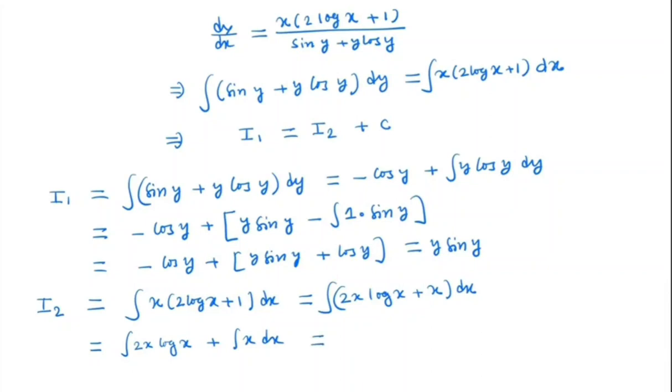So we solve the first term integral 2 x log x by integration by parts. So we have integration of 2 x which is x squared log x minus integration of 2 x is x squared and derivative of log x is 1 over x dx, and here the integral x dx is x squared by 2.